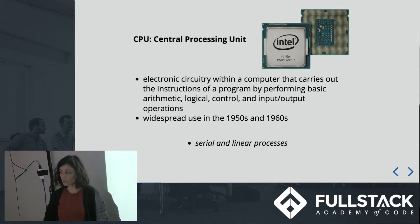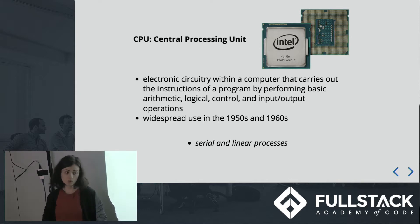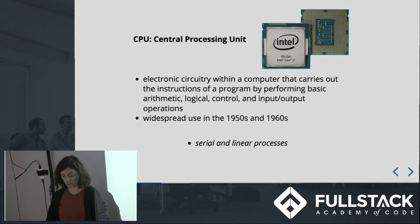CPUs came into widespread use in the 1950s and 60s, and due to their configuration — namely limited storage capabilities and at least initially relative flexibility — they were suited most to serial and linear, that is to say step-by-step, processes.